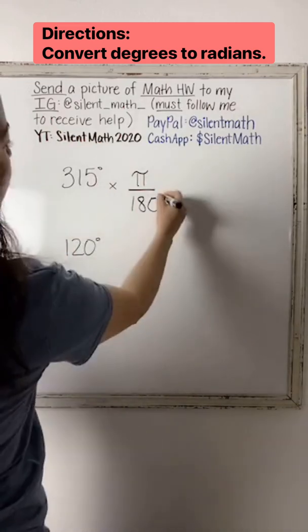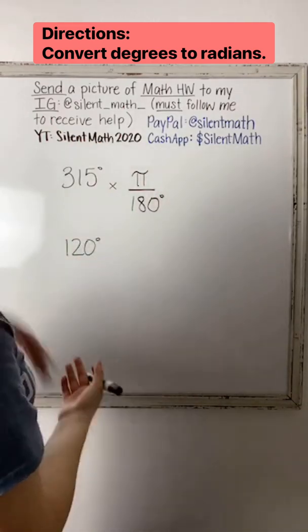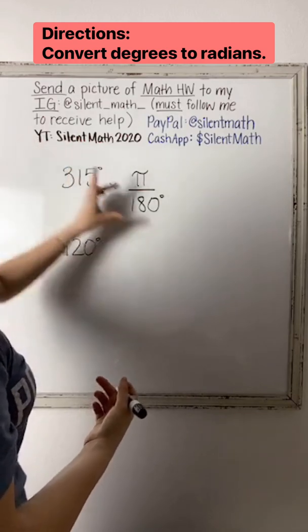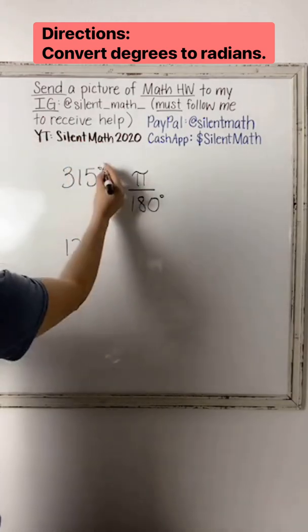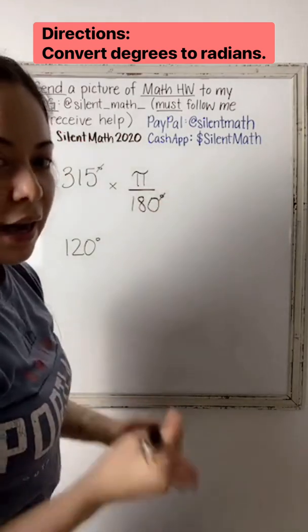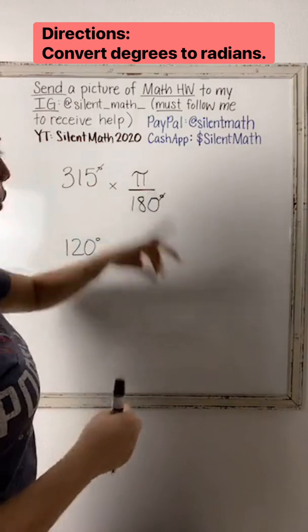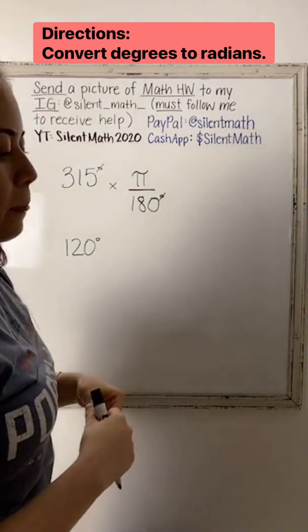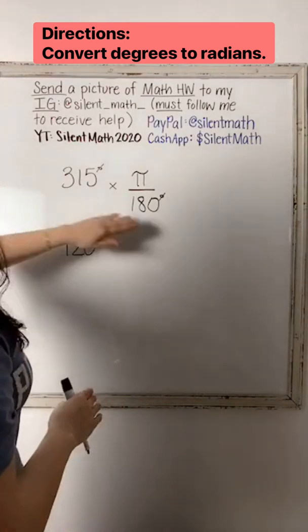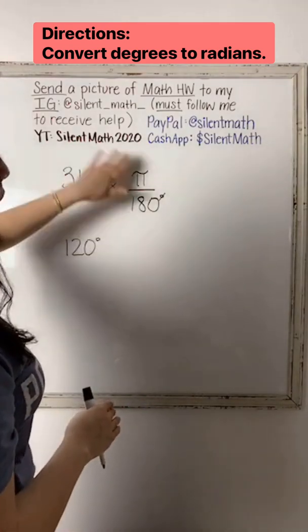But how do you know in which direction? So what I tell my students is, if you're given degree, you want to have degree in the denominator so that these degree symbols can cancel each other out. And yes, you can cancel out symbols, words, units, that is possible. So that is why I'm placing the 180 here and not on top here.